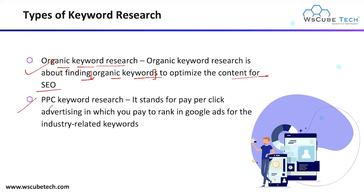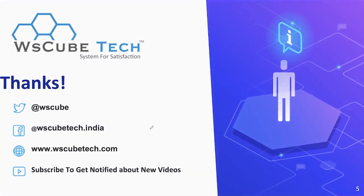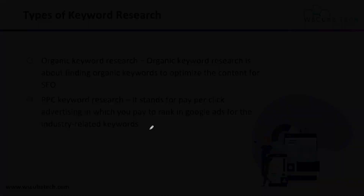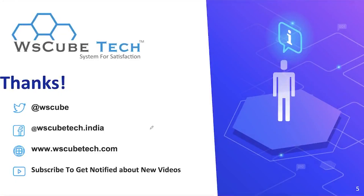The second type is PPC, that is pay-per-click keyword research. When you are creating advertisements for your website, you use certain keywords. For a particular keyword you want your advertisement to rank, you select those keywords — that is PPC keyword research. It stands for pay-per-click advertising, in which you pay to rank in Google Ads for industry-related keywords.